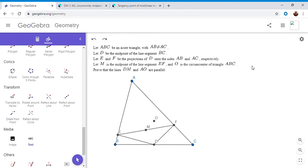So if you want to try to solve it, feel free to pause the video. Alright, so we have a triangle ABC, where AB is not equal to AC, and D is the midpoint of BC. E and F are the feet of the perpendiculars from D to AB and AC. M is the midpoint of EF and O is the circumcenter of ABC. And we want to show that DM and AO are parallel.